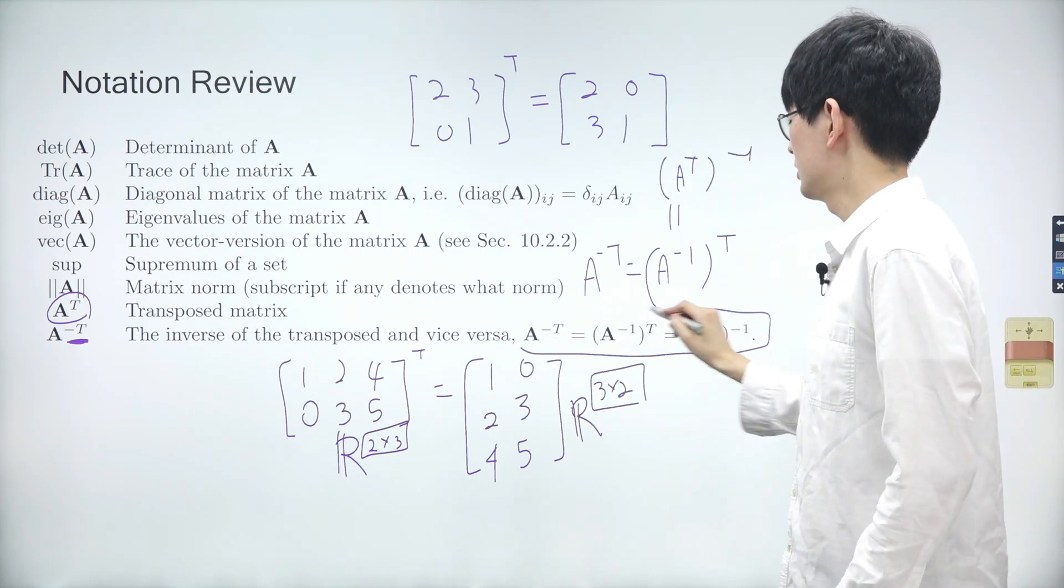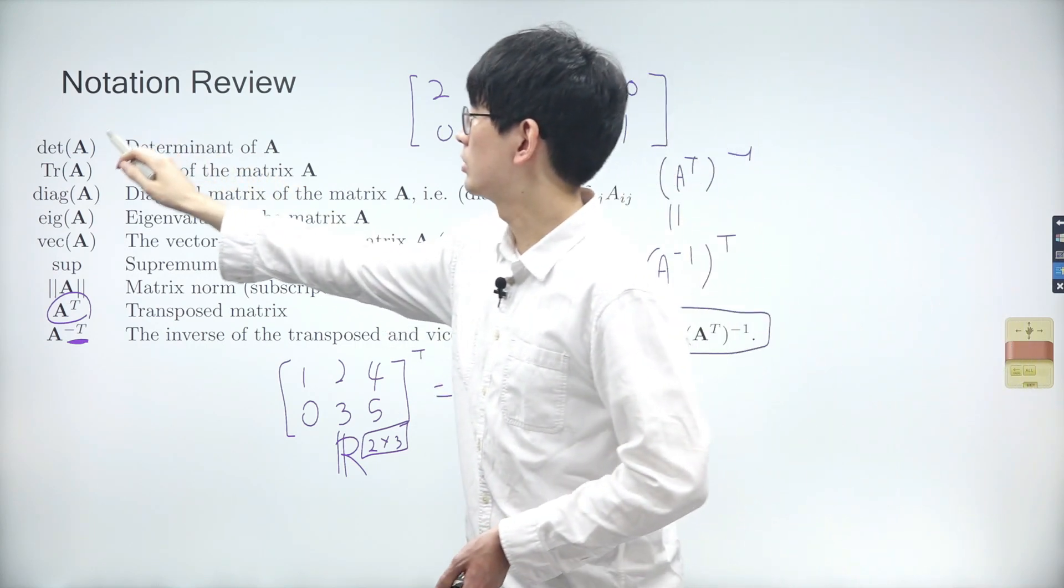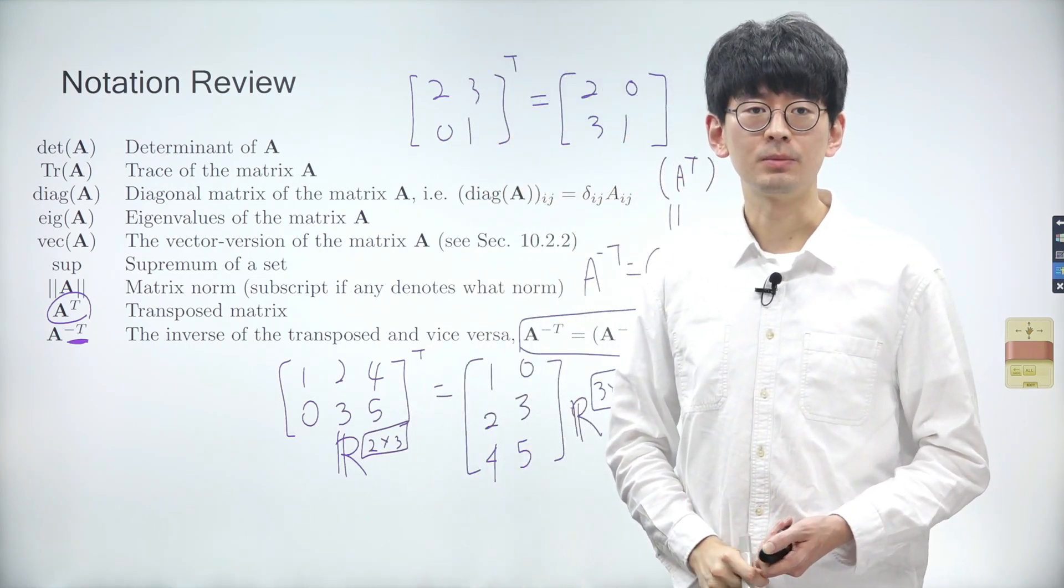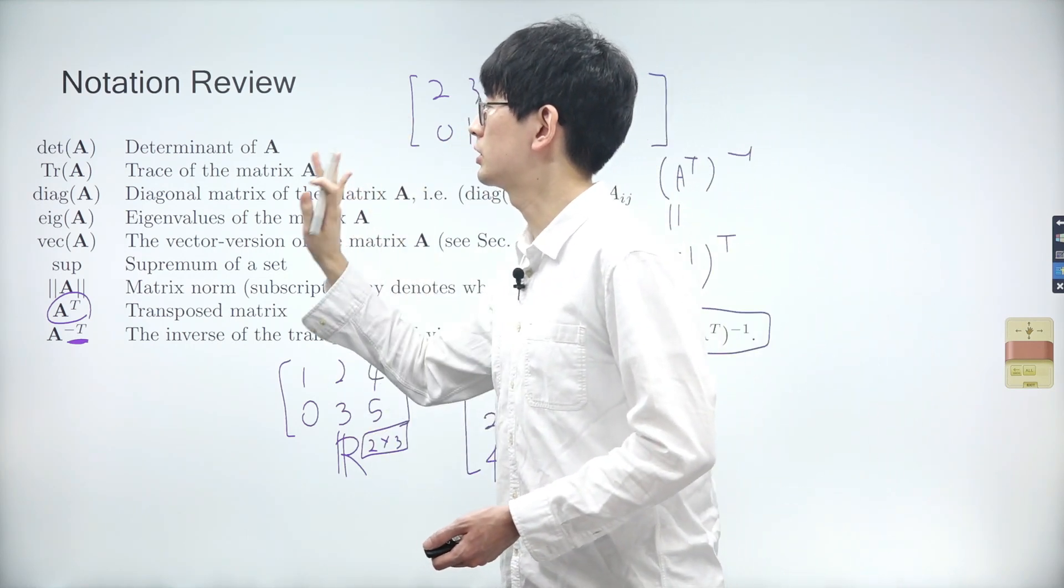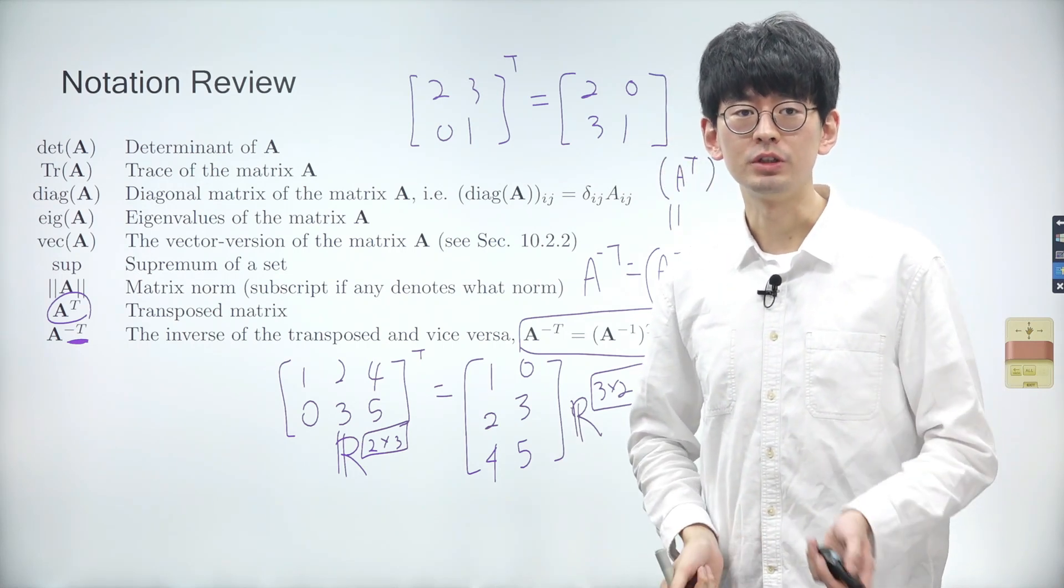Thus, the order of operation does not affect the outcome. So far, we've reviewed some of the key operations involving matrices. In linear algebra, certain operations are represented by letters or symbols, so it's important to remember their representations.